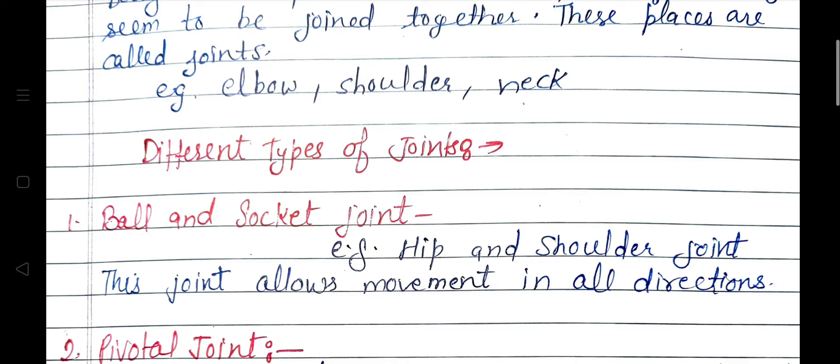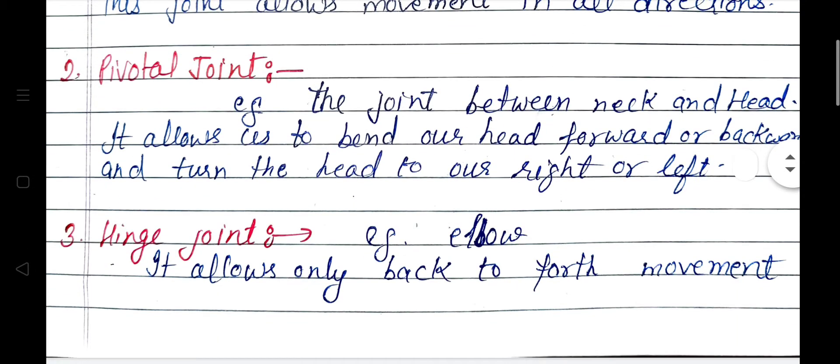The ball and socket joint allows movement in all directions. The pivotal joint is the joint between neck and head. It allows us to bend our head forward and backward and then turn the head to the right or left.